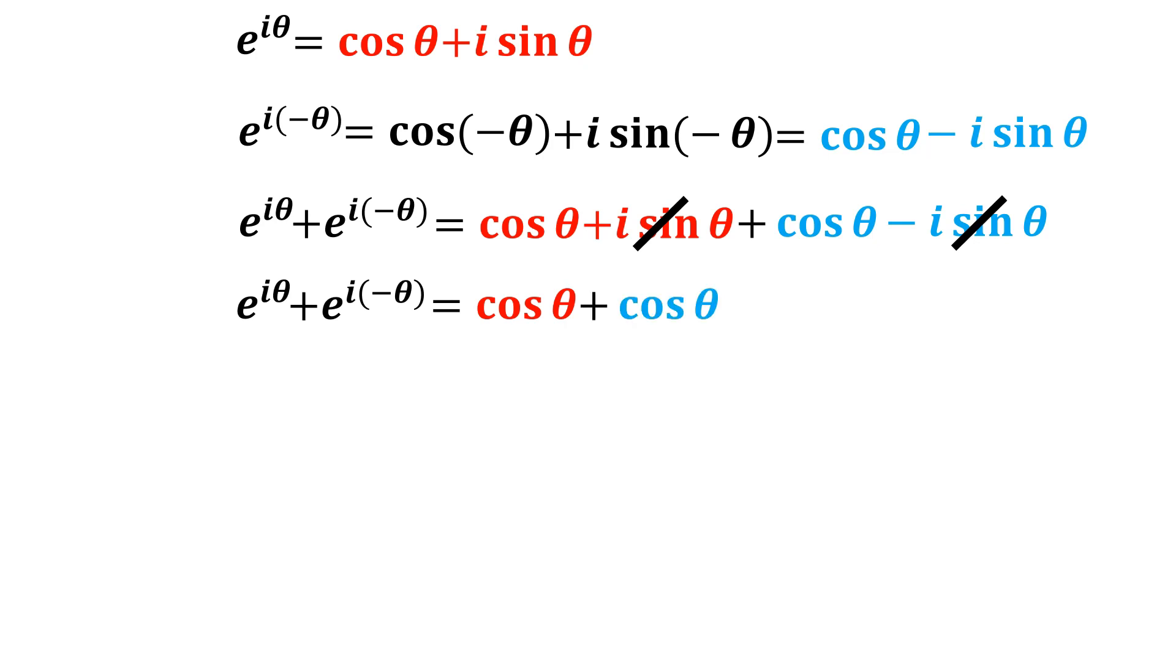On the right side, I've got two cosines. I can add them together, so it's going to be now e to the iθ plus e to the i negative θ equals 2 cos θ.